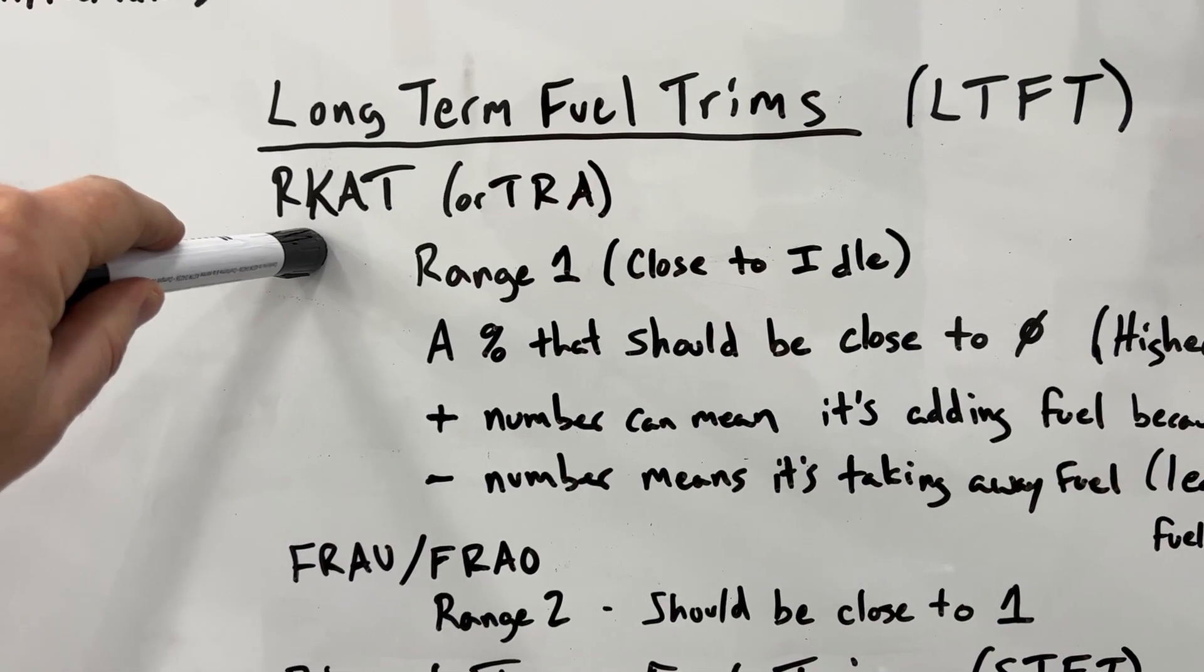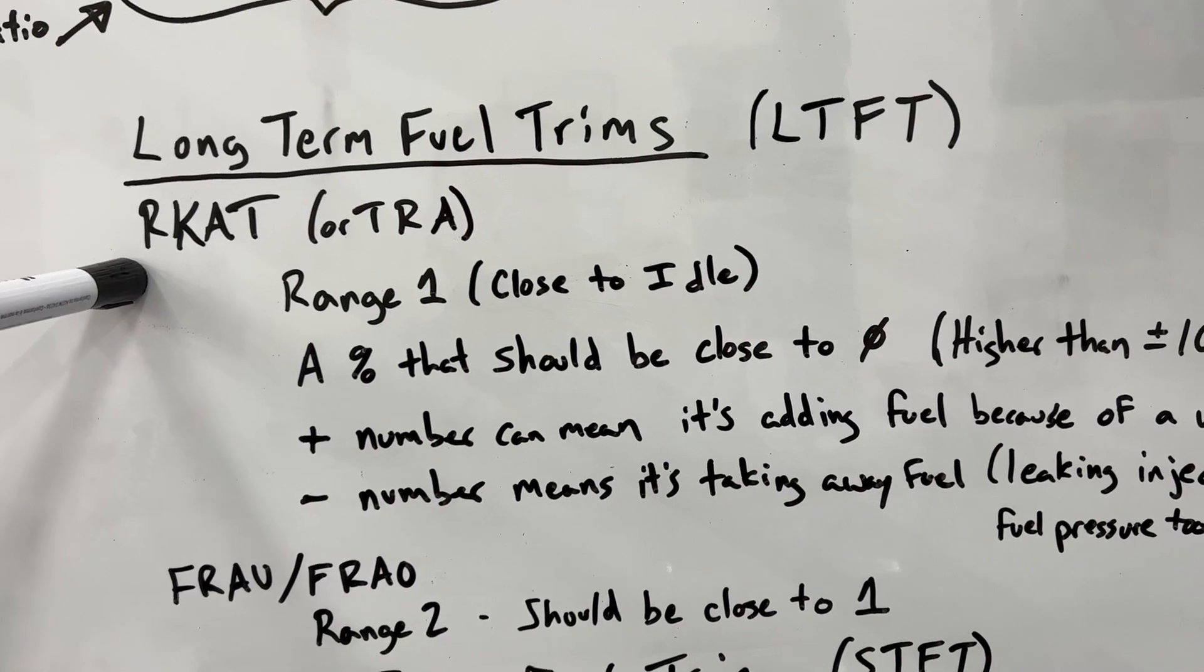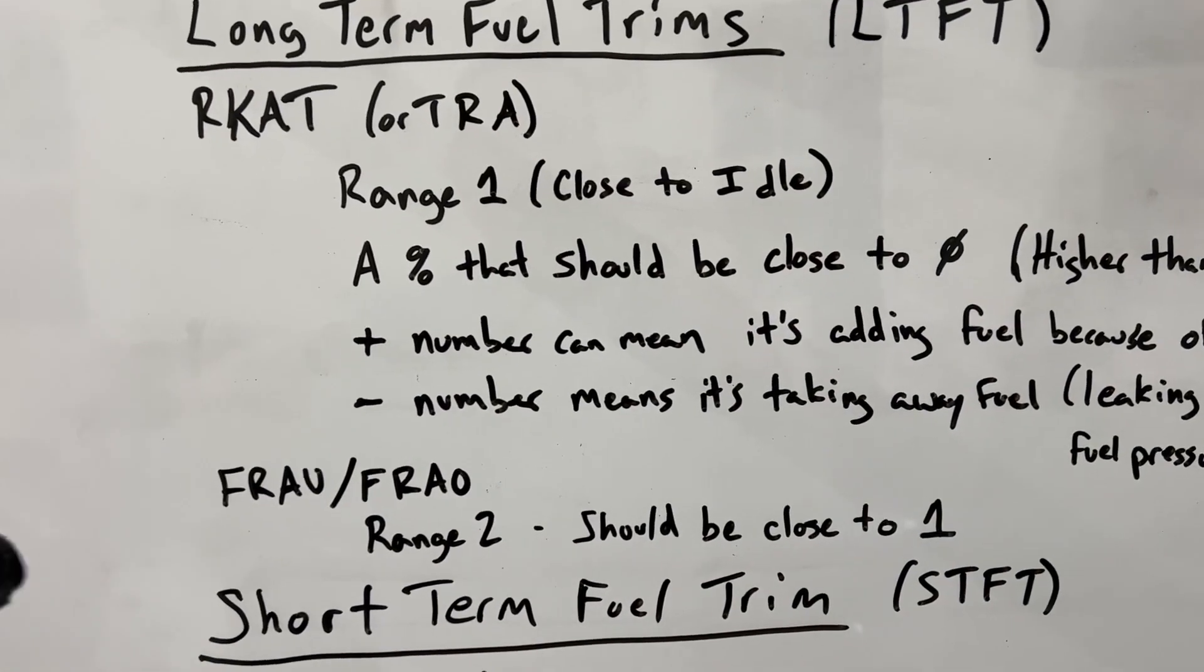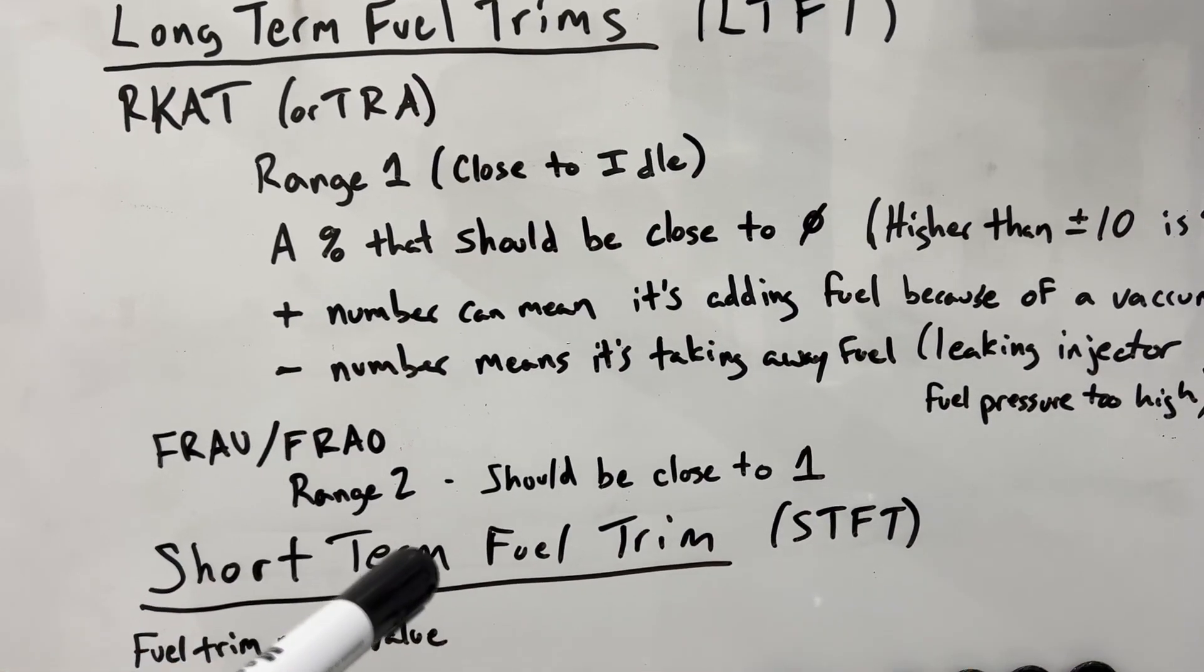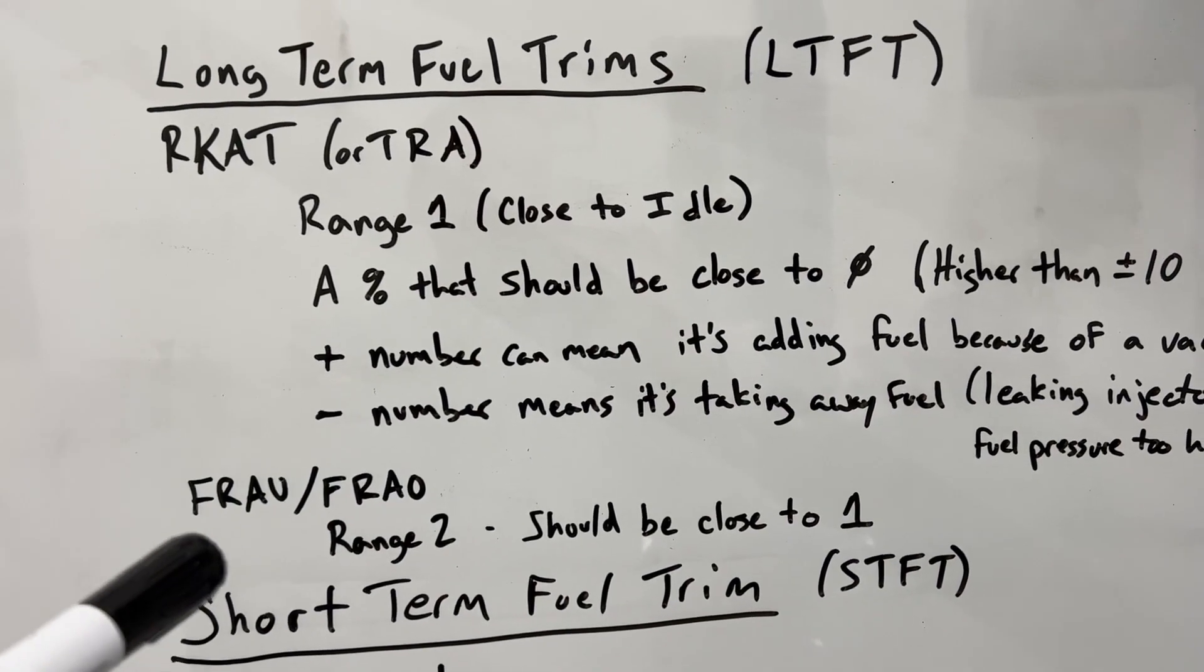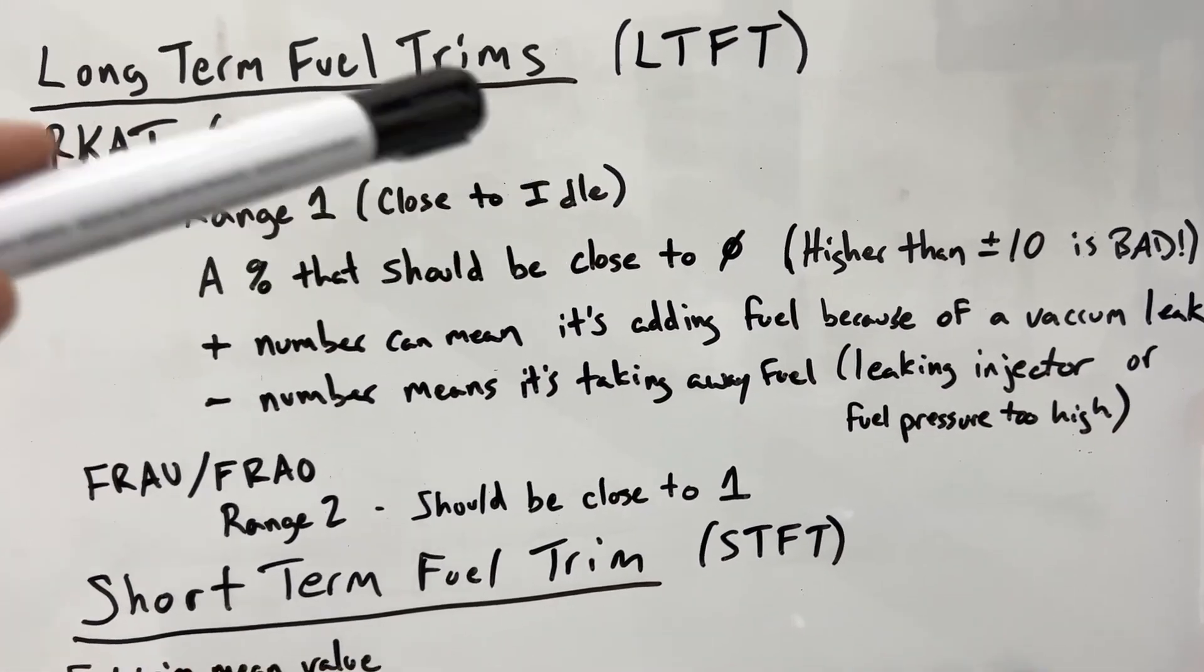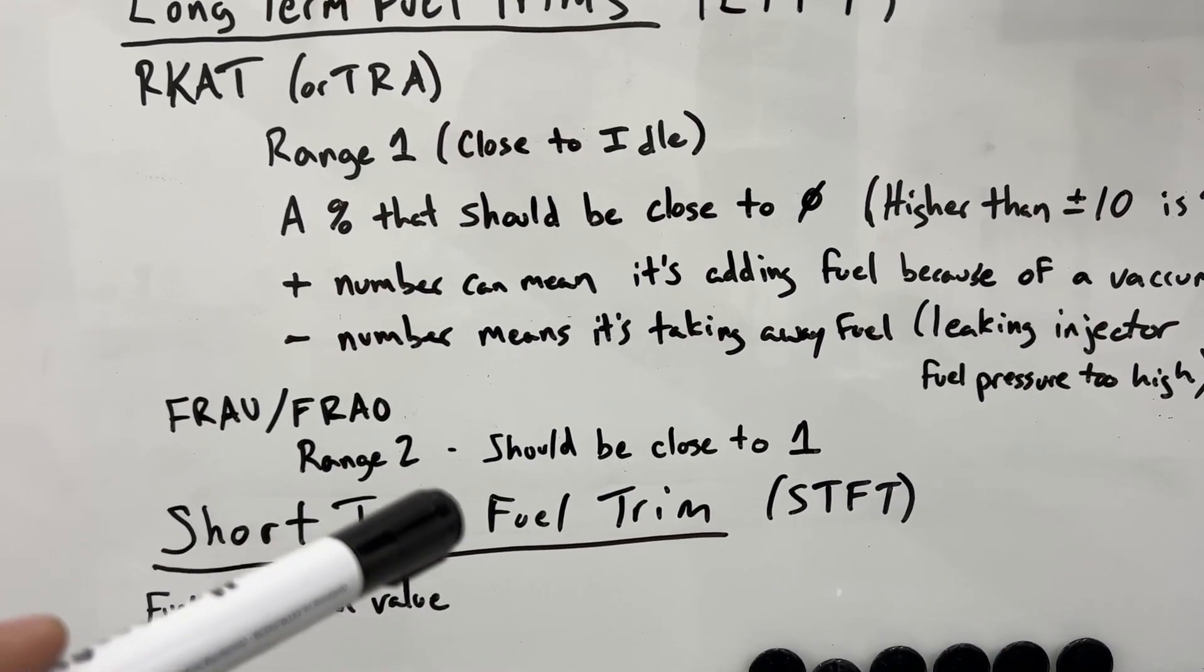We have different values that we can look up on the P-Wiz. One of them is the RCAT, or I guess it's also called the TRA for some cars or applications or whatever. There's another one called FRAU or FRAO, which I have not actually found yet on the P-Wiz. So if you guys know how to find that, or maybe we'll find it today, let me know. So these are for two different ranges. The RCAT is for when you are close to idle, and this one is range two, so like when you are on the accelerator, I'm assuming.